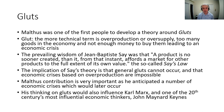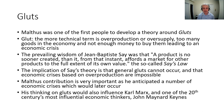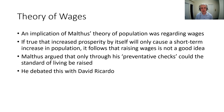His thinking on gluts would be very influential on other theorists. Major examples are Karl Marx and John Maynard Keynes, two of the most influential economic theorists of all time, both of whom did a lot of thinking about the crisis of overproduction. For Marx, we need to get to socialism; for Keynes, government needs to manage the economy. They were only able to think about this because of the preceding work Malthus did on gluts — even though both strongly disagreed with Malthus about many things, they built upon his work.